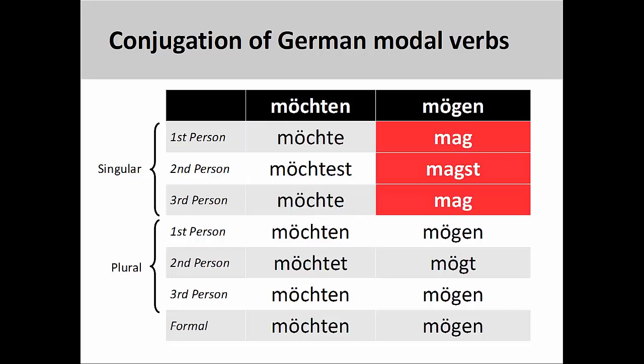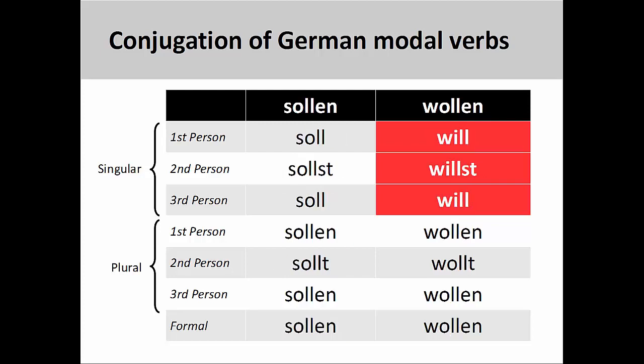The stem vowel in the modal verb möchten does not change in either the singular or the plural. However, the stem vowel in the modal verb mögen changes from ö to a in the singular and goes back to ö in the plural. The stem vowel in the modal verb sollen does not change in either the singular or plural. The stem vowel in the modal verb wollen changes from o to i in the singular and goes back to o in the plural.